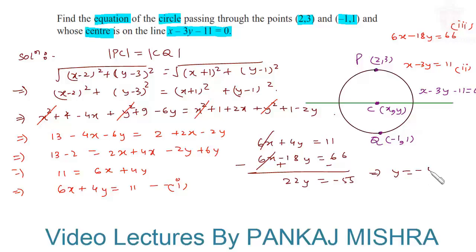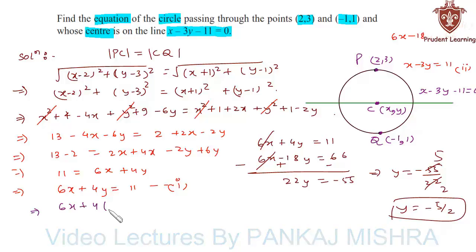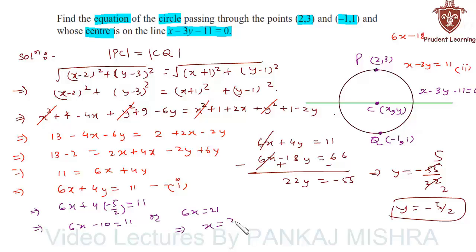This implies y equals minus 55 over 22, which simplifies to y equals minus 5 by 2. Substituting into Equation 1: 6x plus 4 times (minus 5 by 2) equals 11, giving 6x minus 10 equals 11, so 6x equals 21, which means x equals 21 over 6, simplified to x equals 7 by 2. Hence the coordinates of center C are (7/2, minus 5/2).